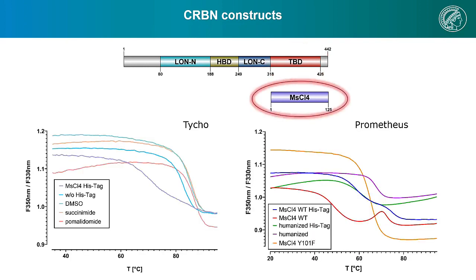For the bacterial protein referred to as MsCrbn, overall melting temperatures were about 20 degrees higher. We saw that the purification His-tag significantly decreased melting temperatures, while ligand binding, as expected, significantly increased the melting temperatures. Additionally, mutations of bacterial residues to mimic human amino acids barely affected their stability, as shown for these humanized constructs.